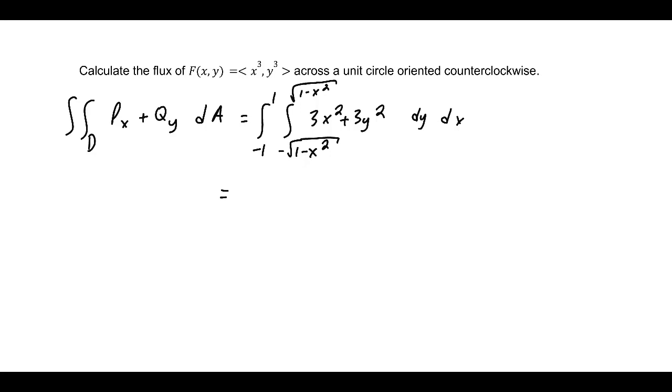Using some of our identities, this equals the integral from 0 to 2π with respect to θ of the integral from 0 to 1 with respect to r of 3r² times r.